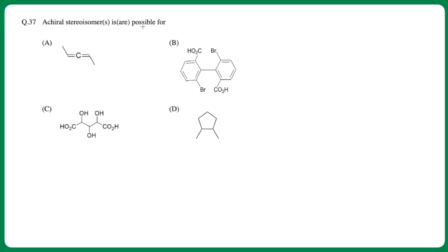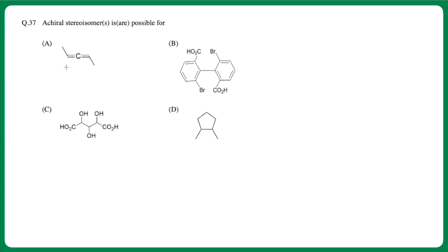The next question asks: which achiral stereoisomers are possible for the given molecule? You have four options. To answer this, you have to look at the concept of chirality along a chiral axis. This molecule is an allene-type molecule with a chiral axis, making it chiral. Option B also has a chiral axis and is chiral. Option C is a meso compound — there is a plane of symmetry through the molecule making it achiral. Option D also has a plane of symmetry bisecting the molecule into two equal halves, so it is also achiral. The correct answer is C and D.